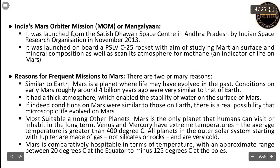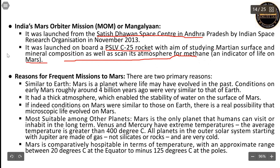India's Mars Orbiter Mission, known as MOM or Mangalyaan, was launched from the Satish Dhawan Space Centre in Andhra Pradesh by ISRO. It was launched on the PSLV-C25 rocket with the aim of studying the Martian surface, mineral composition, and to scan its atmosphere for methane — an indicator of life on Mars.